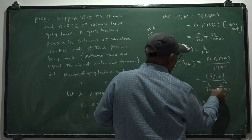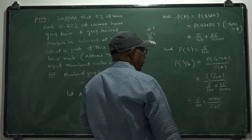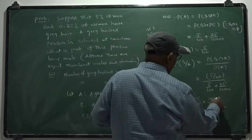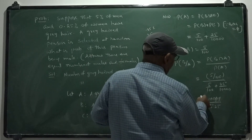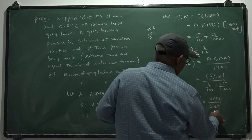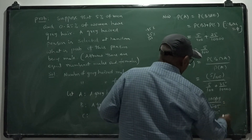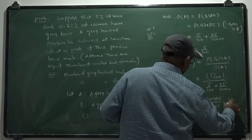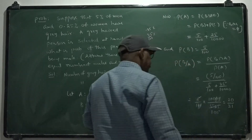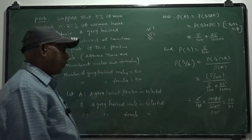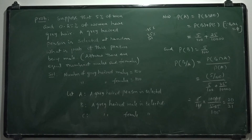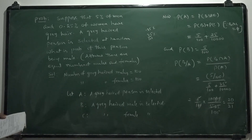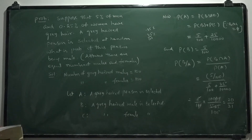This gives us 5 by 100 divided by the total, which simplifies to 10000 by 525 — that is 500 plus 25. Simplifying: 100 by 105 equals 20 by 21. The required probability is 20 by 21.